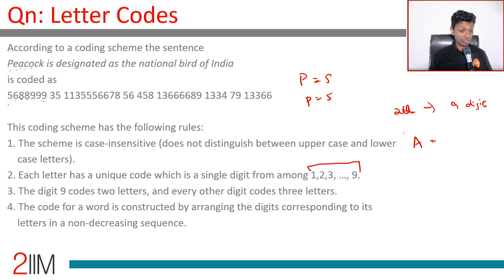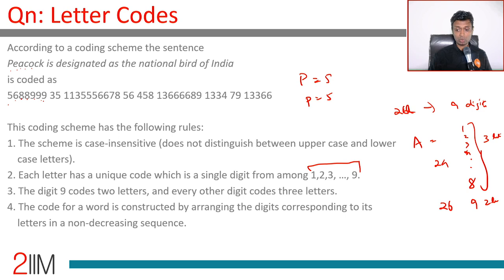The digit nine codes two letters; every other digit codes three letters. Digits one through eight each code three letters, accounting for 24 letters; nine accounts for two letters — 24 plus 2 equals 26. The code for a word is constructed by arranging the digits for its letters in non-decreasing sequence. This is a very interesting criterion.